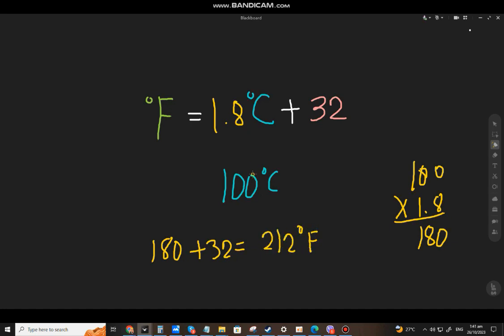So simple as that, if you have a given Celsius you multiply it by 1.8, then the answer you have to add 32 to it. So the boiling point of water is either 100 degrees Celsius or 212 degrees Fahrenheit.